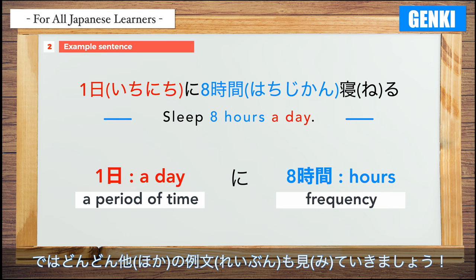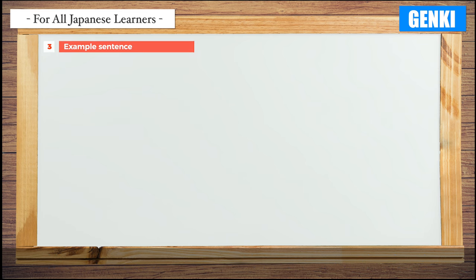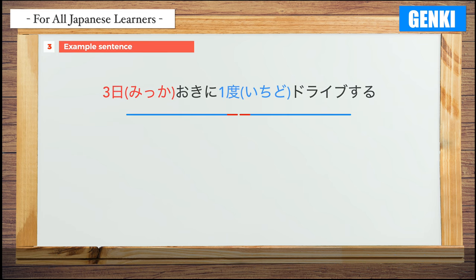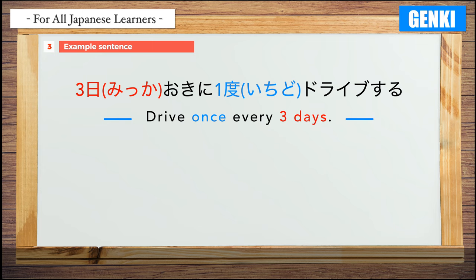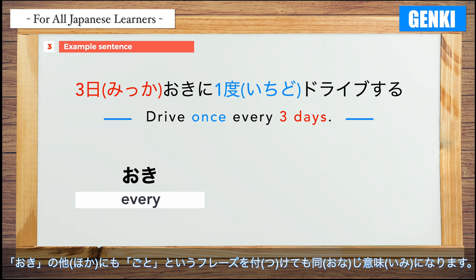Let's look at another example sentence. Example 3: 3日おきに1度ドライブする — Drive once every 3 days. The word おき can be added after a period of time to mean 'every.' In addition to おき, the phrase ごと can be added to mean the same thing.